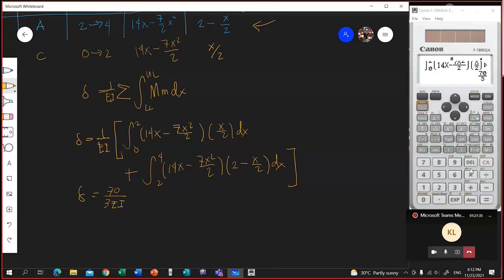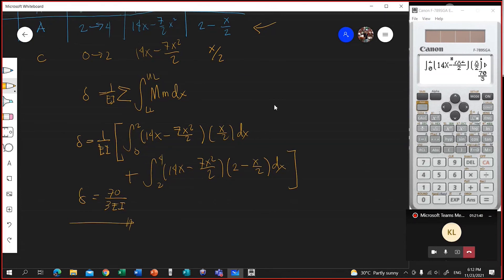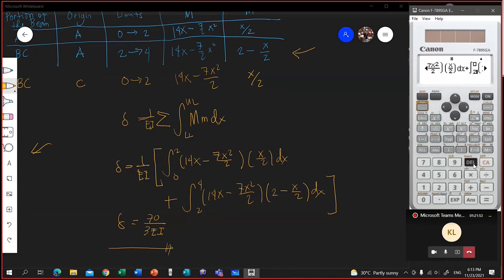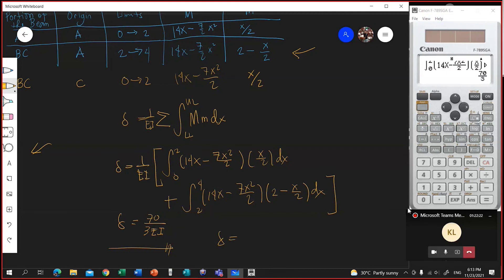Now what will happen if instead of using this equation for B-C, we use the other B-C? Let me recall the equation. Basically the same. What changed is the small letter m, so let me erase that. Instead of 2 minus x over 2, I'll put x over 2. And the limits, instead of 2 to 4, I'll put 0 to 2. We should have the same answer, 70 over 3 EI. So the deflection is indeed 70 over 3 EI.